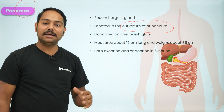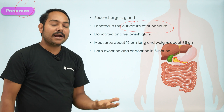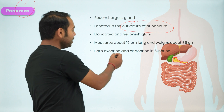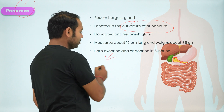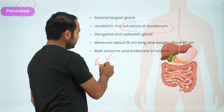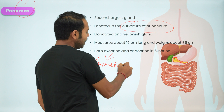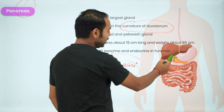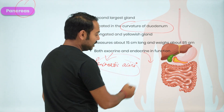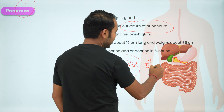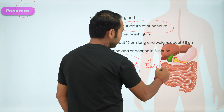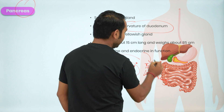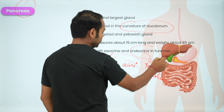The pancreas has both exocrine and endocrine functions. The exocrine function relates to its digestive secretions, while the endocrine function relates to hormone secretion into the bloodstream.